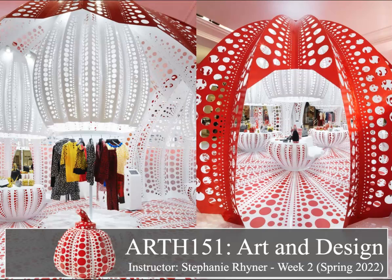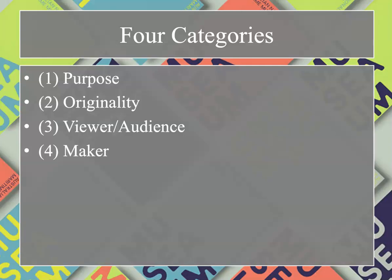This is a short continuation of our conversation surrounding art and design, investigating four specific ways in which we see this separation between art and design occurring. These are very fluid and not necessarily strict definitions. We're going to talk about four categories of defining and thinking about art and design — separating them but also talking about their similarities. Those categories are purpose, originality, viewer and audience, as well as maker.